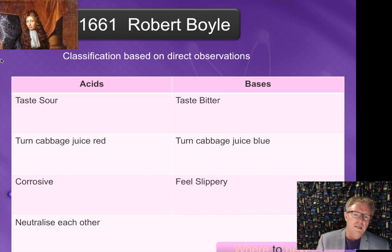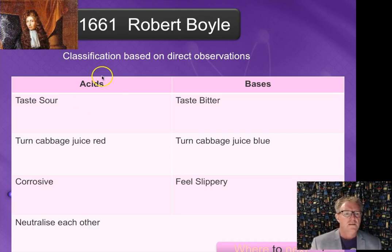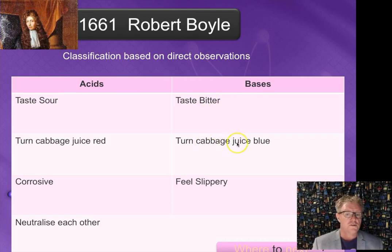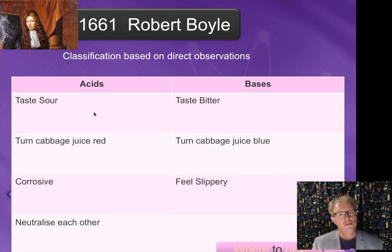Robert Boyle put our basic definitions of acids and bases together from experimental observations. Acids are sour tasting, they turn cabbage juice red, they're corrosive, and they neutralize bases. Bases, on the other hand, taste bitter, turn cabbage juice blue, and they feel slippery. We know a lot of these characteristics from everyday experience — soap feels slippery so it must be a base, and an orange tastes sour so it must be acidic. Those are the basic definitions from Robert Boyle.